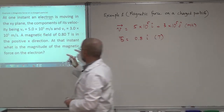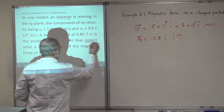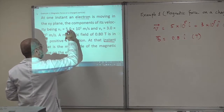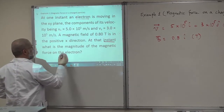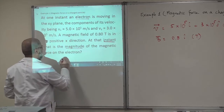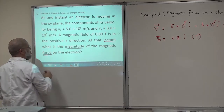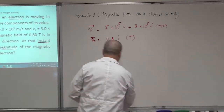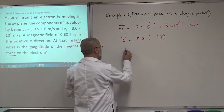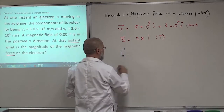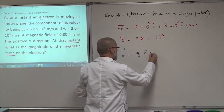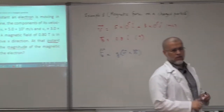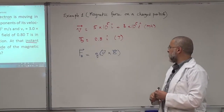He's asking at that instant — because maybe at another instant the velocity components will be different — but at that instant, when he gives you these velocity components, what is the magnitude of the magnetic force? So he's looking for the magnetic force on the electron. You know the Lorentz force — the equation for the magnetic force FB equals Q V cross B. This formula here is very important.